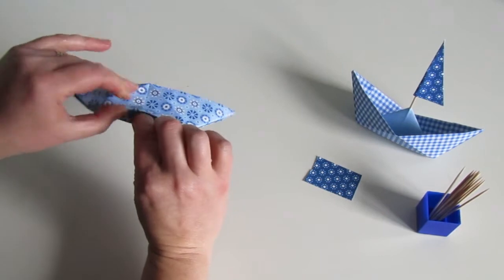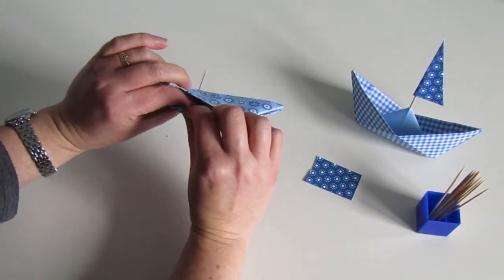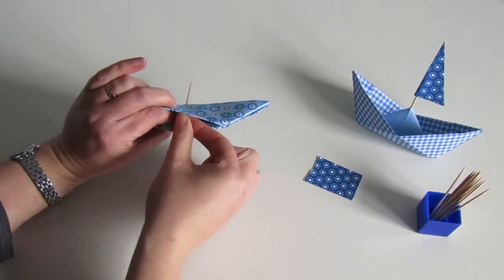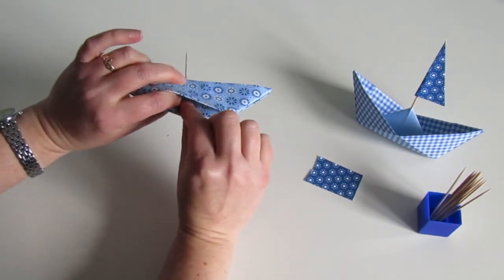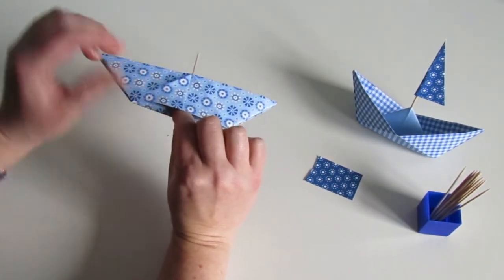But I thought it would be better to secure it with a little bit of sellotape. So I've just cut some sellotape here, and you can just see inside a little bit of sellotape on the bottom of that cocktail stick.